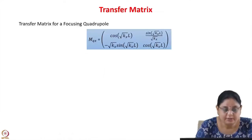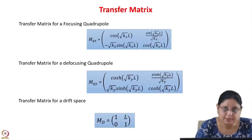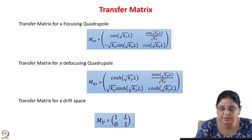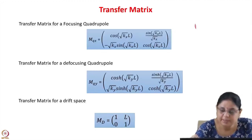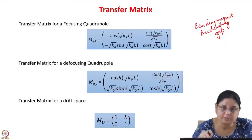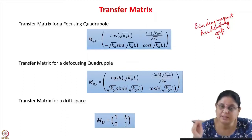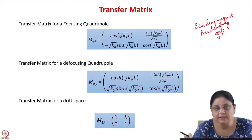An electric quadrupole has four poles arranged symmetrically in the x-y plane with the beam moving in the z direction. The force due to the electric field is independent of velocity, unlike the force due to the magnetic field. We have now calculated the transfer matrix for a focusing quadrupole, a defocusing quadrupole, and a drift space. Every component — bending magnets, accelerating gaps — will have a transfer matrix, and knowing it along with initial coordinates gives final coordinates.